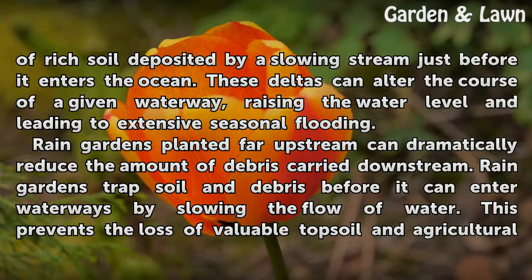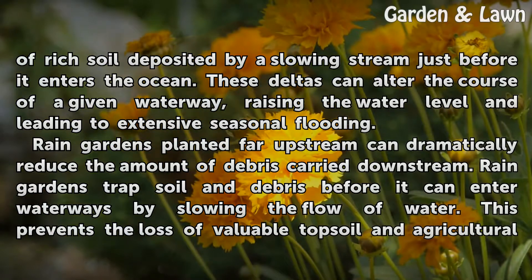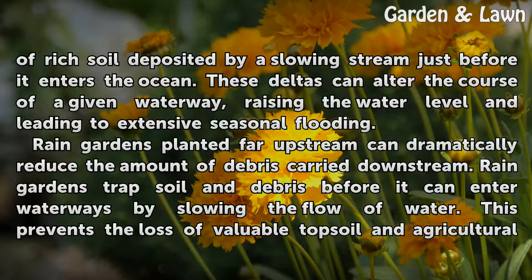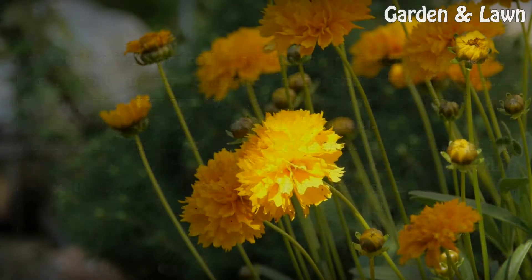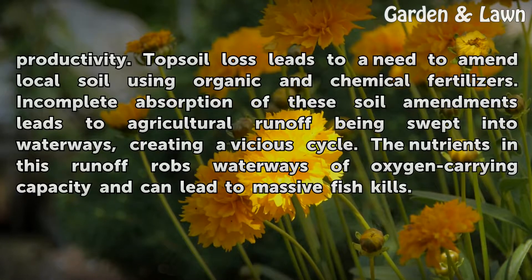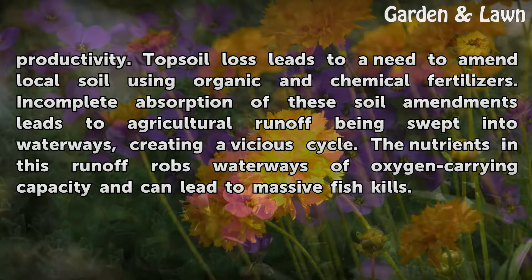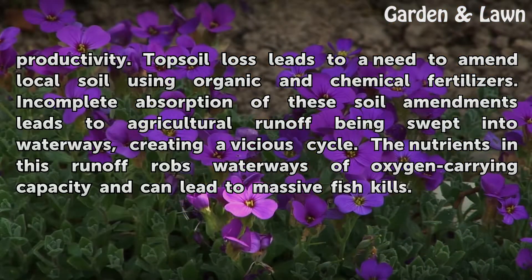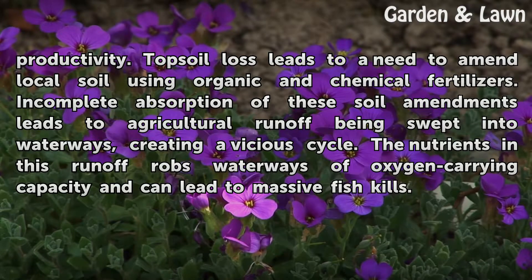Rain gardens planted far upstream can dramatically reduce the amount of debris carried downstream. Rain gardens trap soil and debris before it can enter waterways by slowing the flow of water, preventing the loss of valuable topsoil and agricultural productivity. Topsoil loss leads to a need to amend local soil using organic and chemical fertilizers, and incomplete absorption of these soil amendments leads to agricultural runoff being swept into waterways, creating a vicious cycle. The nutrients in this runoff rob waterways of oxygen-carrying capacity and can lead to massive fish kills.